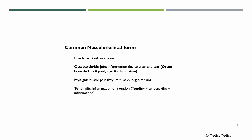Some common musculoskeletal terms: FRACTURE means a break in bone. OSTEOARTHRITIS means joint inflammation due to wear and tear — OSTEO is bone, ARTHR is joint, and -ITIS is inflammation. MYALGIA means muscle pain — MYO or MY is muscle, and ALGEA means pain. TENDINITIS: TENDON plus -ITIS means inflammation of a tendon.